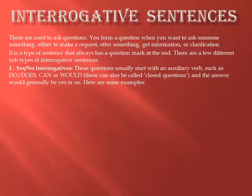The first subtype is yes or no interrogative. In this type of questions we get the answer either yes or no. These questions usually start with an auxiliary verb such as do, does, can or would. These can also be called closed questions and the answer would generally be yes or no.